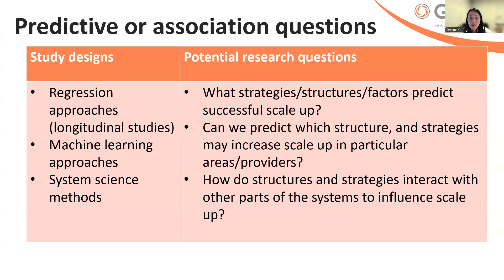For predictive or association questions, they look to assess what structures, strategies, and factors can predict scale-up outcomes. These studies are usually also uncontrolled. The first type of approach is the regression approach — linear or logistic regression. You can collect data, usually in longitudinal studies, to help support that predictive question. You tend to pre-specify a predictive variable and a dependent variable, which is usually your scale-up outcome. In regression approaches, you like to prospectively specify those variables to prevent identifying spurious associations.